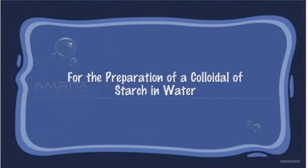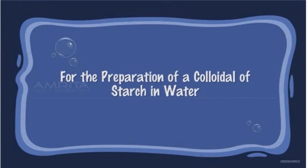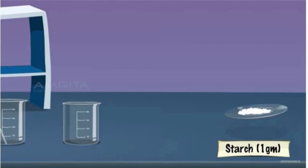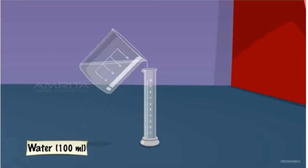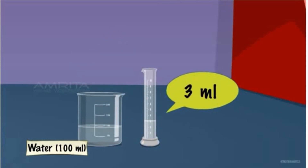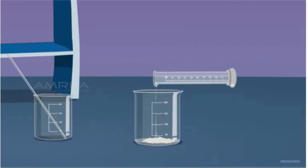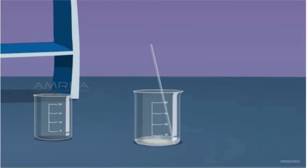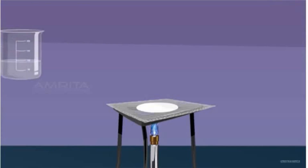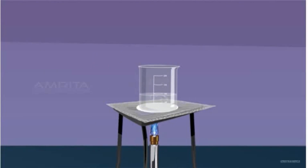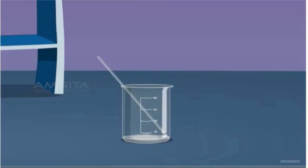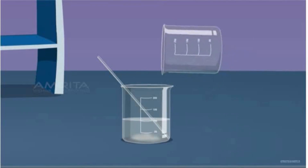Let us prepare colloids. Let's start with the colloidal starch in water. Put 1 gram of starch in the beaker. Measure 3 ml of water and pour it in the beaker. Mix vigorously. Heat the remaining water and, once it's heated, pour the hot water in the mixture. Mix vigorously.